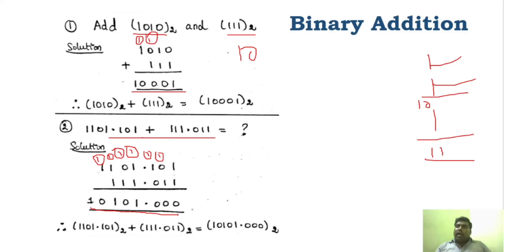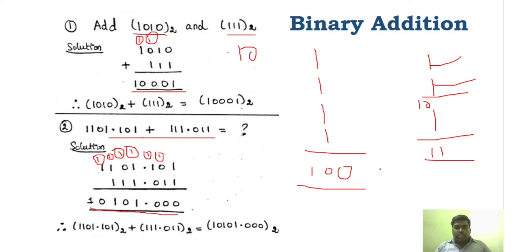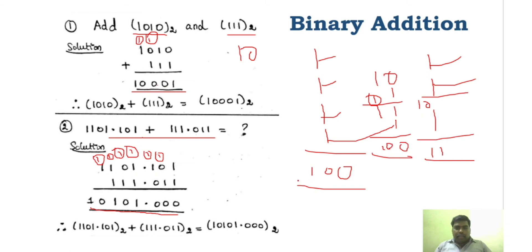Understand one particular logic: how many 1s you get, use the same logic — 1 plus 1 is 10, that is 1 and 0. For example, if you get four 1s, the answer will be 100. How? 1 plus 1 is 10, then 10 plus 1 is 11, then 11 plus 1 gives 1 and carry 1, and 1 plus 1 is 10 — so the result is 100. And if it is five 1s, you add one more 1, giving 101. Similarly it goes on.